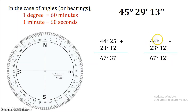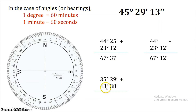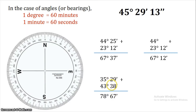Now, 35 degrees 29 minutes plus 43 degrees 38 minutes. We add: 9 plus 8 is 17, write 7 and carry 1; then 3 plus 3 is 6, then 5 plus 3 is 8, and 4 plus 3 is 7. This gives 78 degrees 67 minutes.